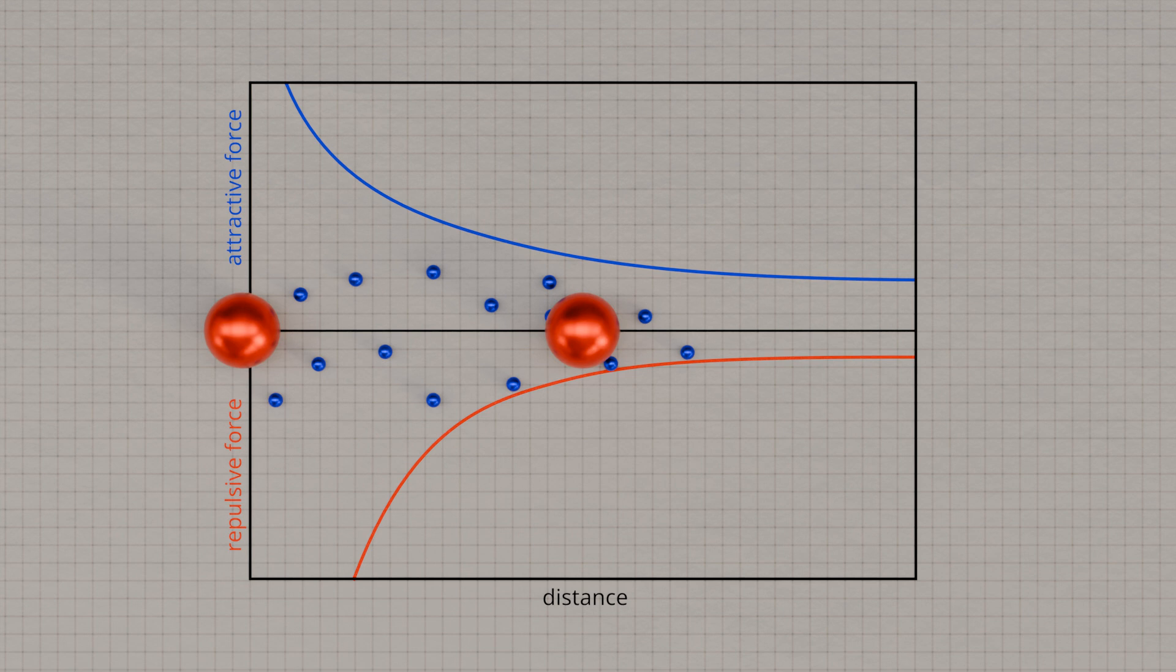The electron gas thus tries to bring the cations closer together, while the cations themselves repel each other. Because of the different charge distribution, the attractive and repulsive forces obey different laws. For two cations, the diagram shows the course of the attractive force due to the electron gas, shown in blue, and the repulsive force due to the identical charge, shown in red.